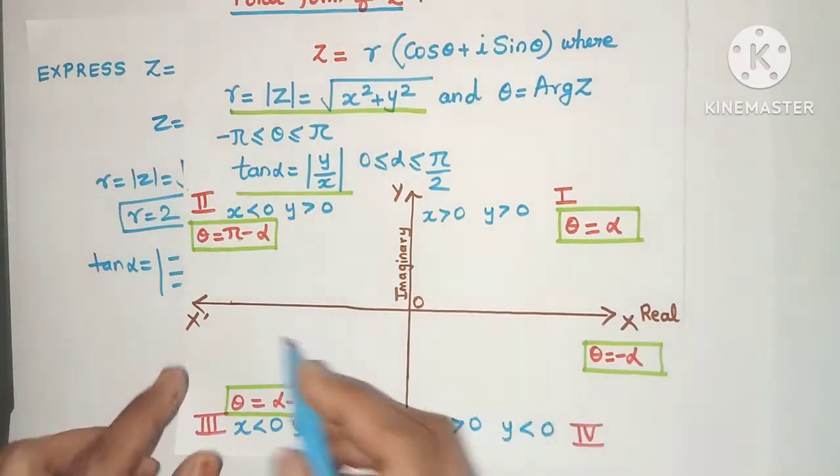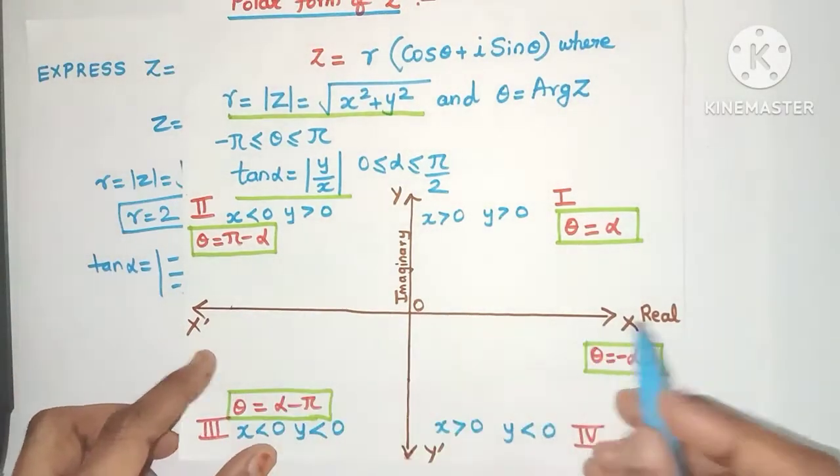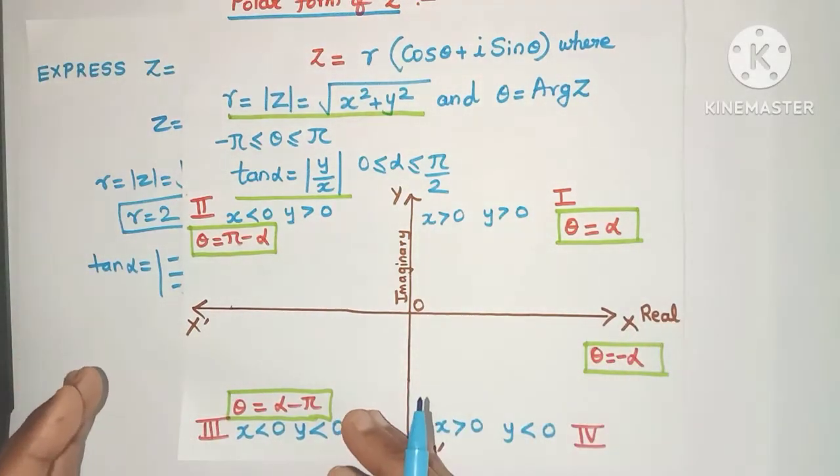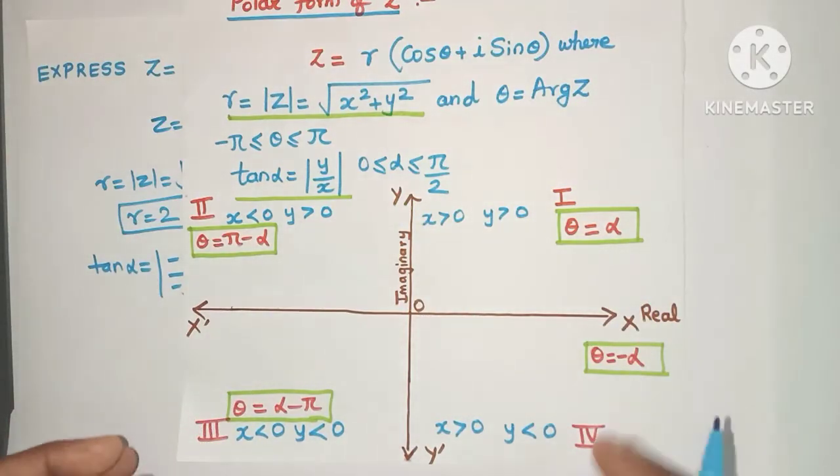So every complex number can be represented on such an xy plane where x axis is the real part of the complex number and y axis is the imaginary part of the complex number.